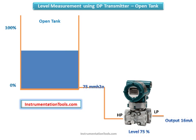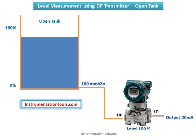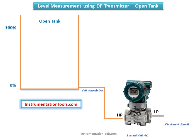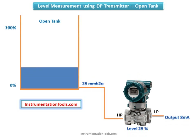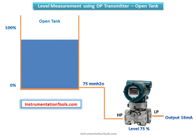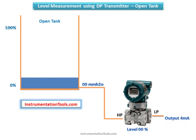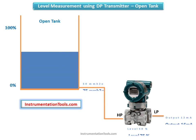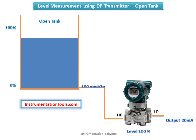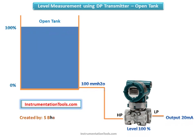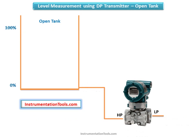The highest level detected by the DP transmitter depends on the maximum height of fluid above the transmitter, while the lowest detectable level is based on the position where the transmitter is attached to the tank. The liquid creates pressure higher than atmospheric reference pressure, and the DP transmitter senses the head pressure developed by the liquid height, multiplied by a density variable for accurate level measurement.